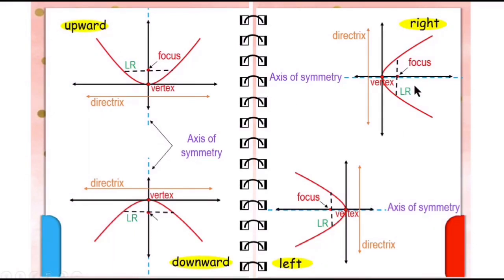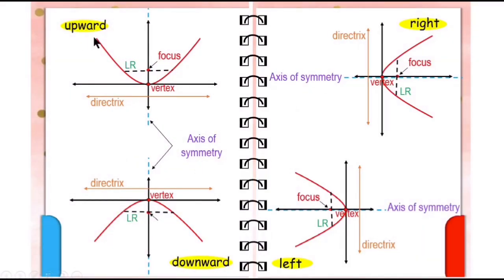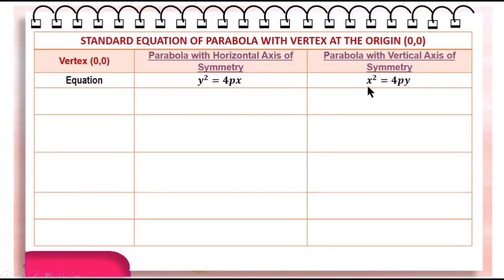If the axis of symmetry of the parabola is horizontal — meaning the parabola opens right or left — the axis of symmetry is along the x-axis, and the equation is y² = 4px. This is the equation used when the parabola opens right or left. But if the axis of symmetry is vertical, which means the parabola opens upward or downward, the equation is x² = 4py. The equation y² = 4px is quadratic in y, while x² = 4py is quadratic in x.